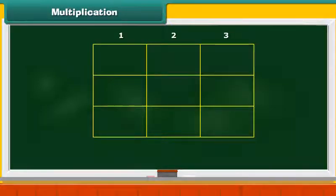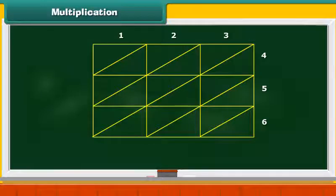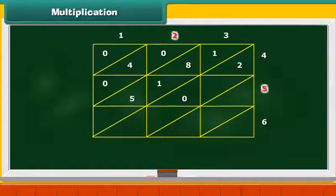On the right, write 4, 5 and 6 from top to bottom. Divide each cell of the table into 2 with the help of a diagonal. Multiply 1 by 4. Write the result as 04 in the first cell. Multiply 2 and 4 and write the result as 08 in the second cell and so on.